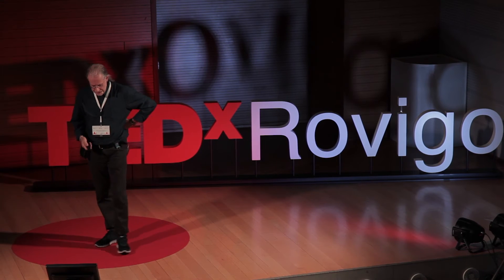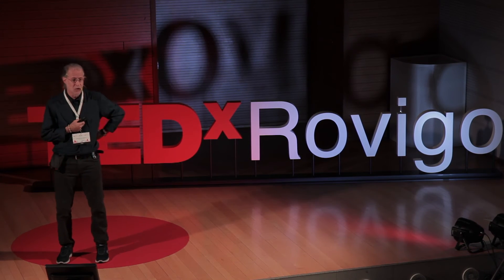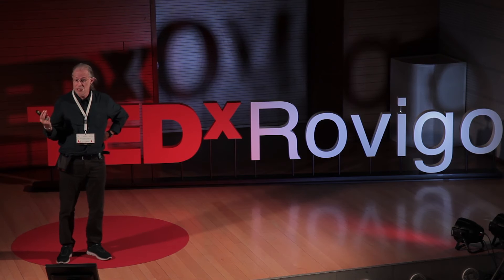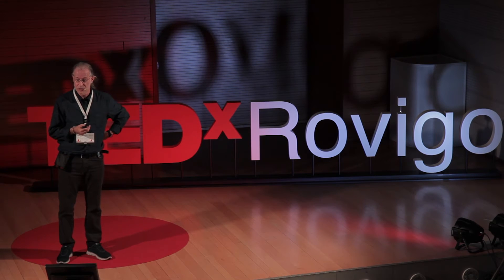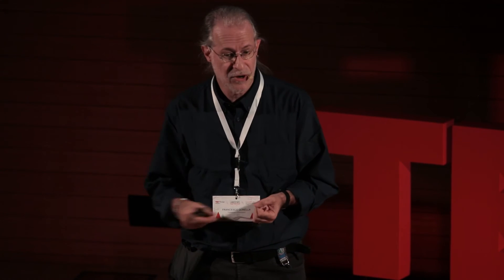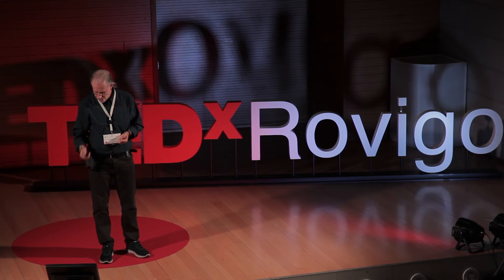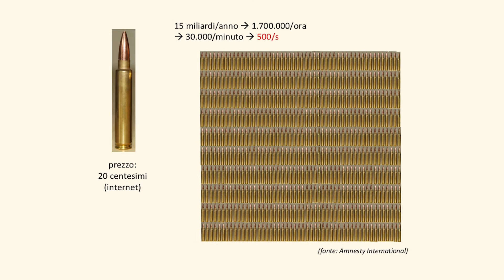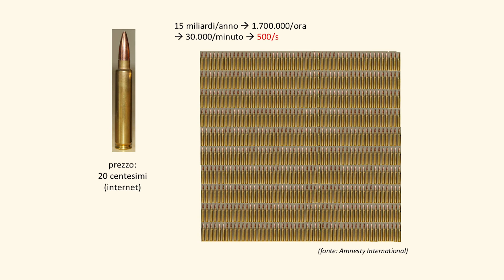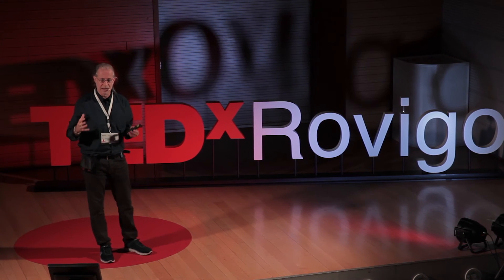Di questo proiettile ne vengono prodotti un sacco. Costa 20 centesimi. Curiosamente, proprio quanto una bottiglia da un litro di petrolio. Lo potete comprare in internet. Se in Italia fosse consentito detenerlo, fate un ordine via web: tre scatole, sei euro, arrivano a casa. 20 centesimi l'uno. E ne vengono prodotti 15 miliardi l'anno — non tutti di questo tipo, in generale delle cosiddette small arms, le piccole armi. 15 miliardi l'anno significa 500 al secondo.